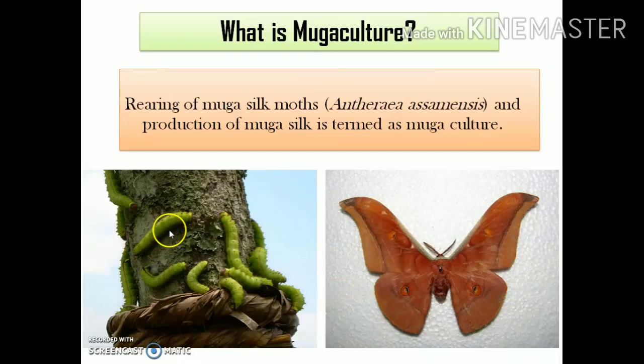This is the larval stage of the Muga silk moths, which are generally green in color. And this is the adult or matured stage of the Muga silk moths — this is how the Muga silkworms look at their adult stage.